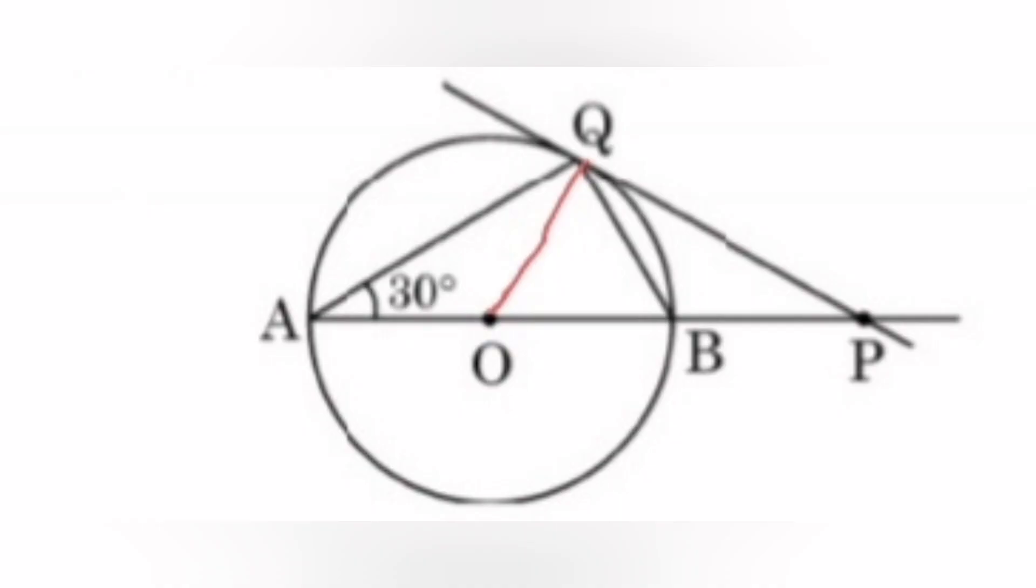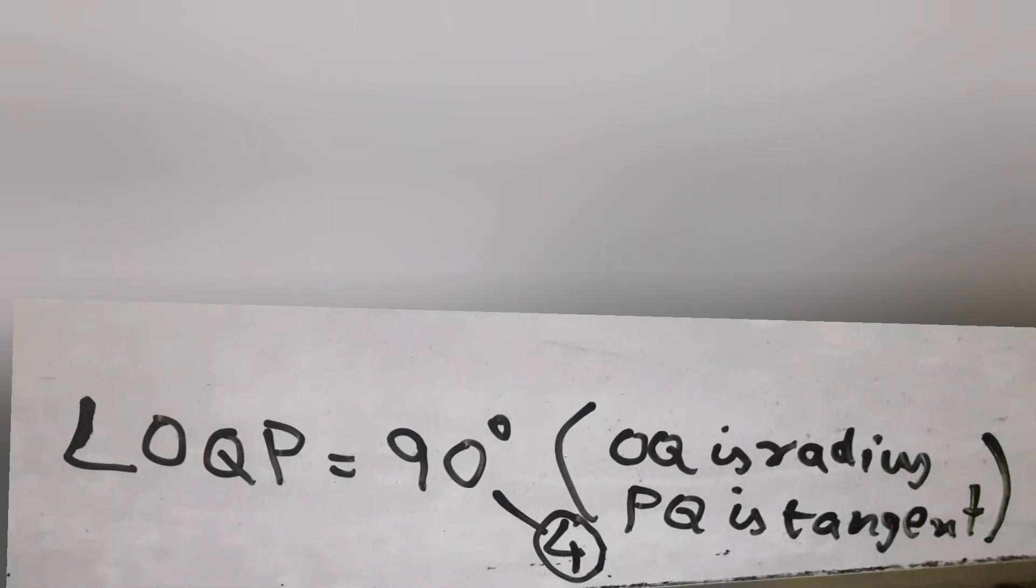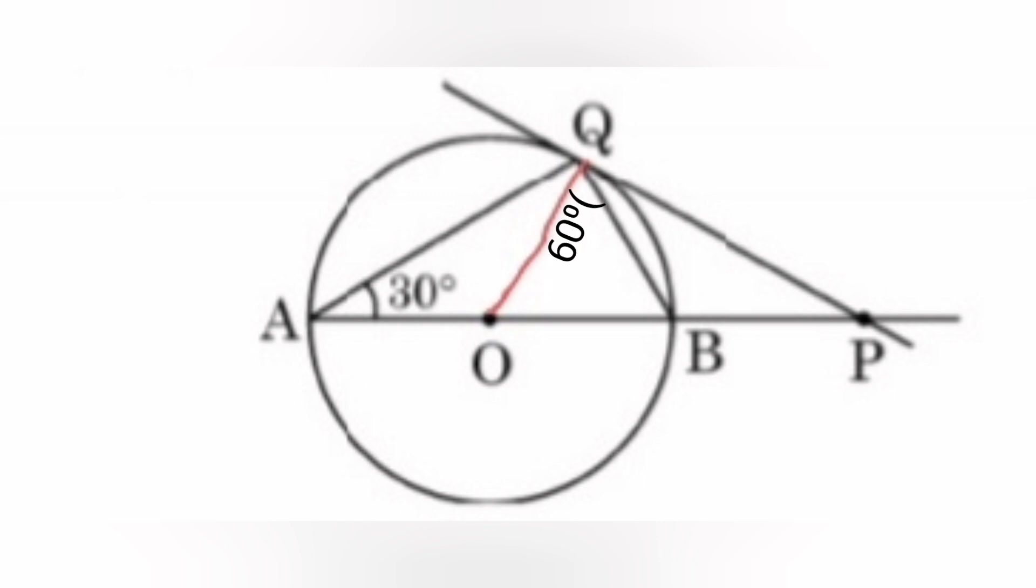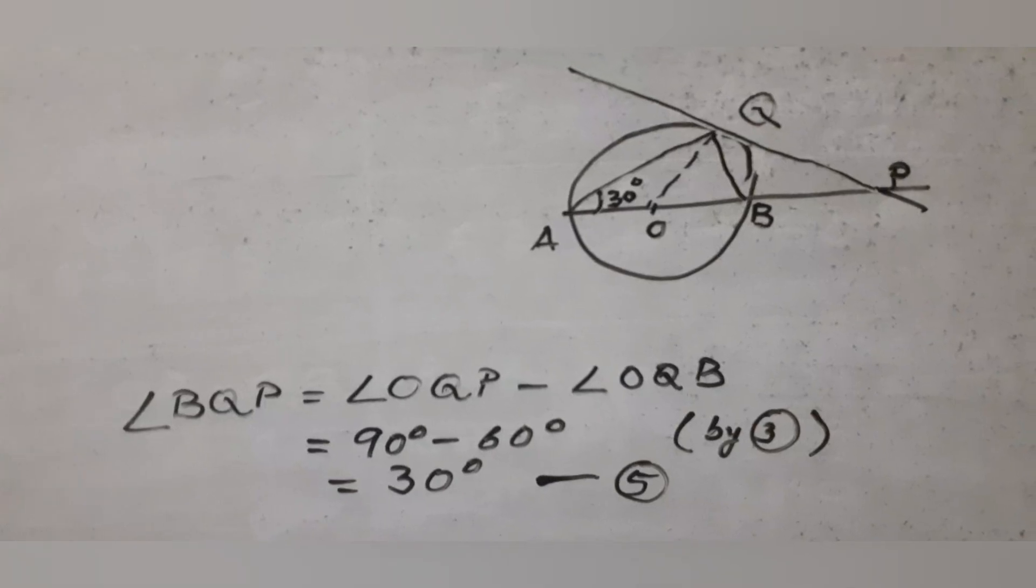PQ is a tangent and OQ is a radius, OQ perpendicular PQ, so angle OQP equal to 90 degrees. Use the angle we calculated to find angle BQP equal to 90 minus 60 which is 30 degrees.